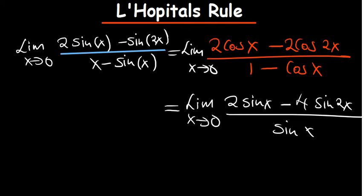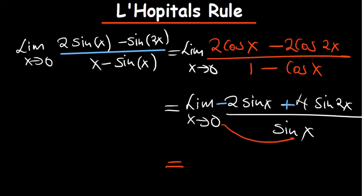Multiplying by the negative that is already there makes it positive, so we get a positive sine of x on the bottom. The derivative of cosine is negative sine, so this will become positive. If we substitute zero, sine of zero is zero — so that's still indeterminate. Let's try one more time.